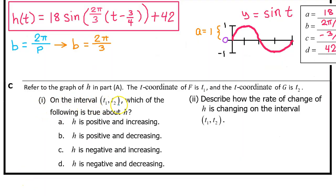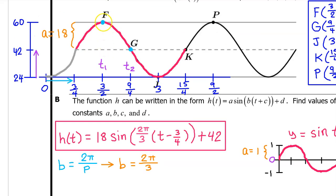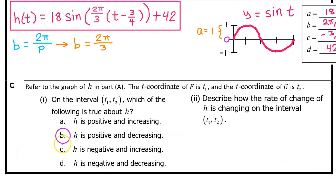C part one. On the interval from t1 to t2, which of the following is true about h? Is h positive and increasing, positive and decreasing, negative and increasing, or negative and decreasing? First of all, h is definitely positive on this interval because all of the output values are between 42 and 60. These are all positive numbers. Also on the interval from t1 to t2, h of t is decreasing because it is falling from left to right. So on the interval from t1 to t2, h of t is positive and decreasing. So the answer is b.